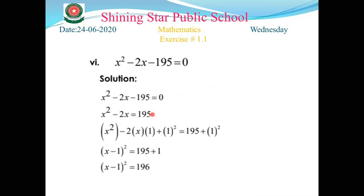The first step: take the constant -195 to the right-hand side, giving x² - 2x = 195. The second step: make the coefficient of x² equal to 1. In this question, the coefficient is already 1, so no division is needed.